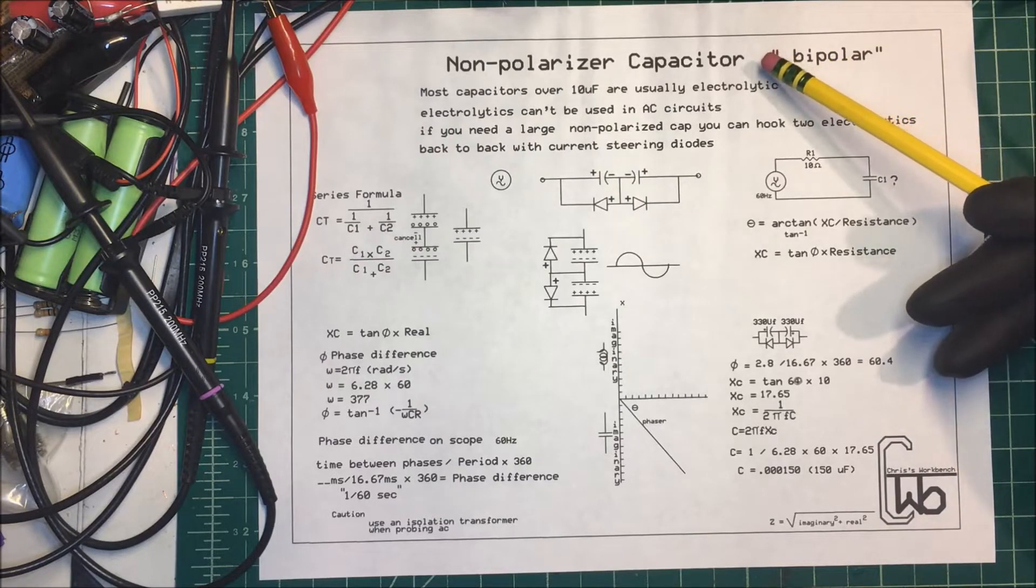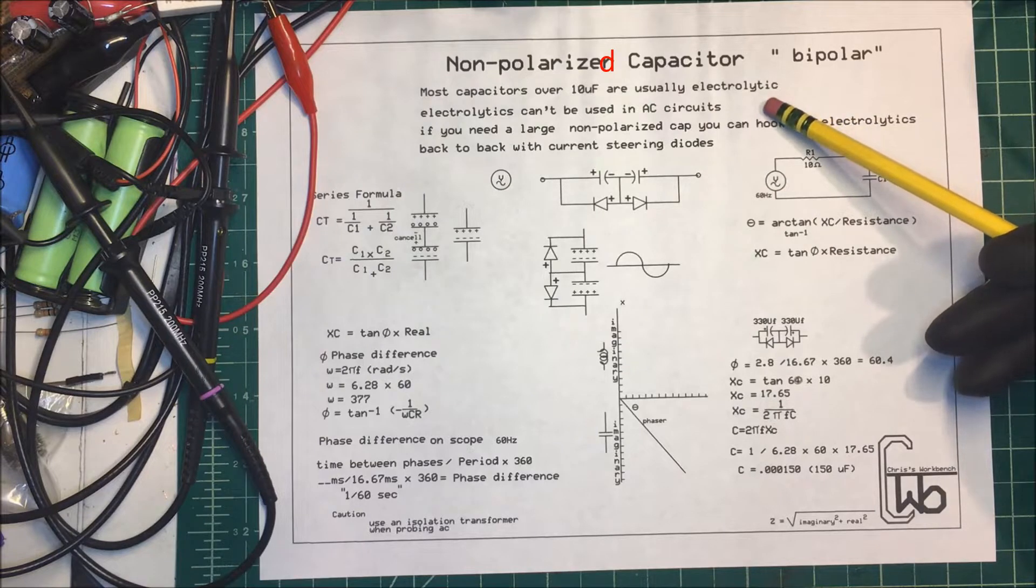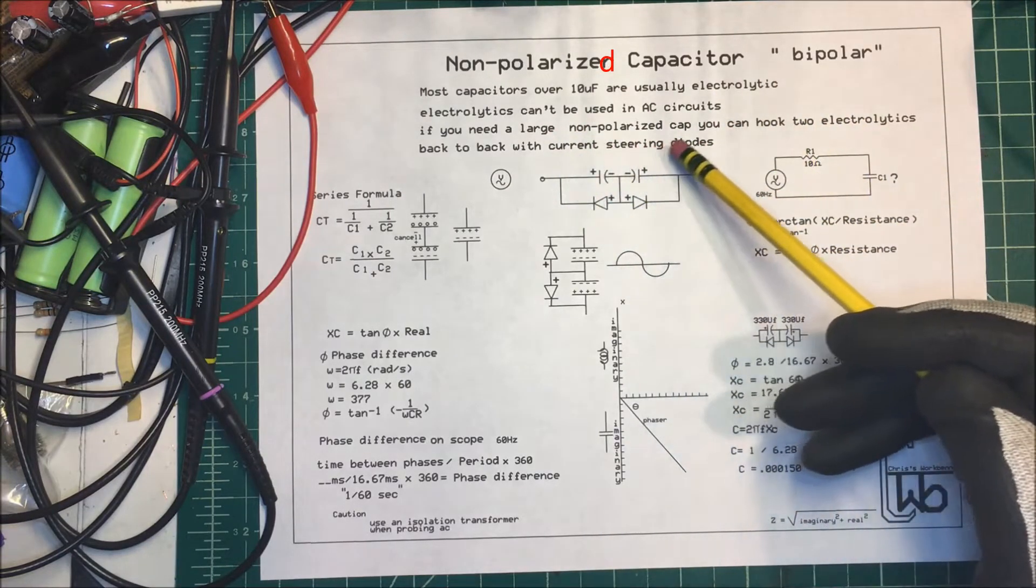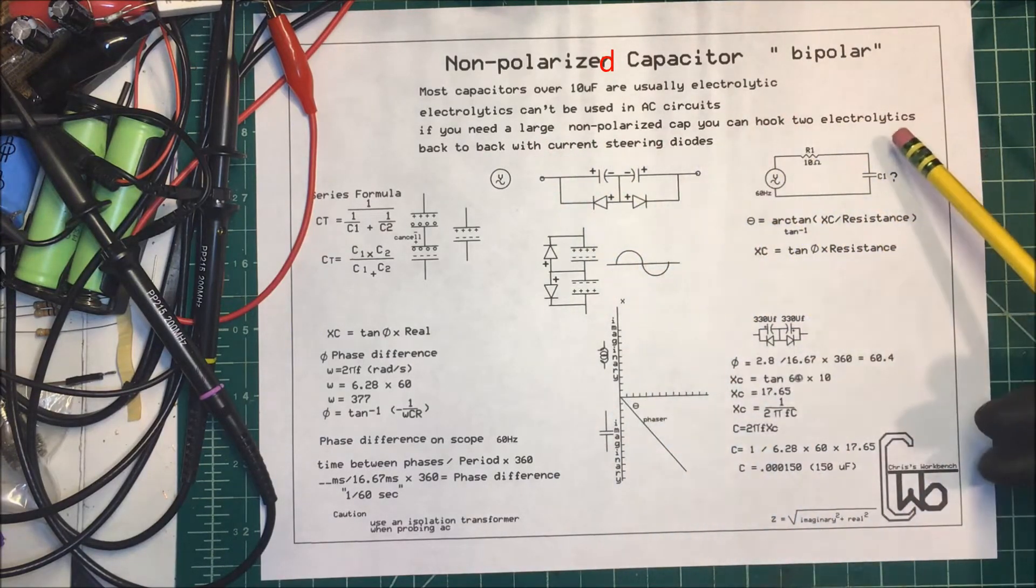Let's talk about non-polarized capacitors. Most capacitors over 10 microfarads are usually electrolytics. Electrolytics can't be used in AC circuits, and if you need a large non-polarized capacitor, you can hook up two electrolytics back-to-back with current-steering diodes.